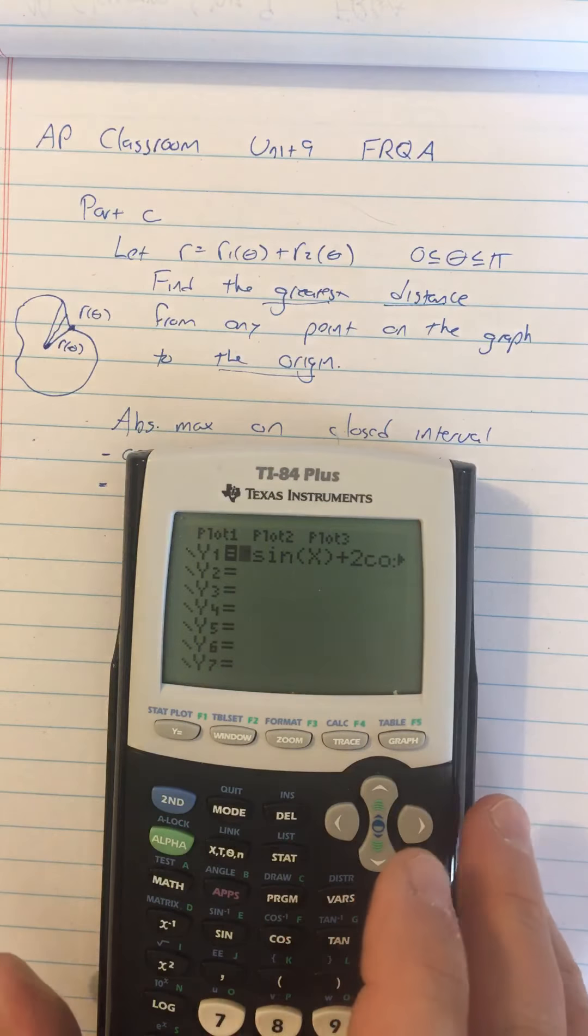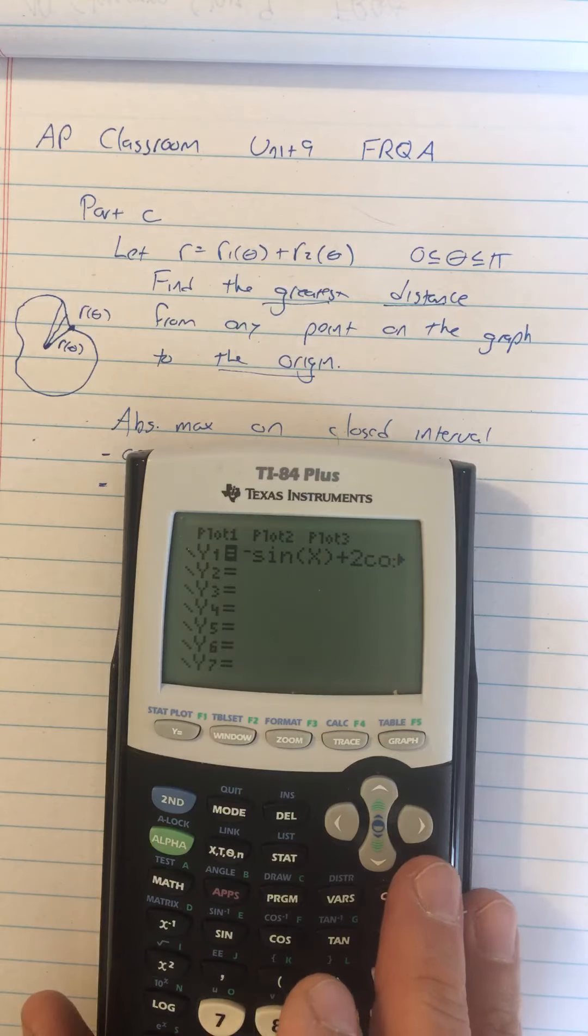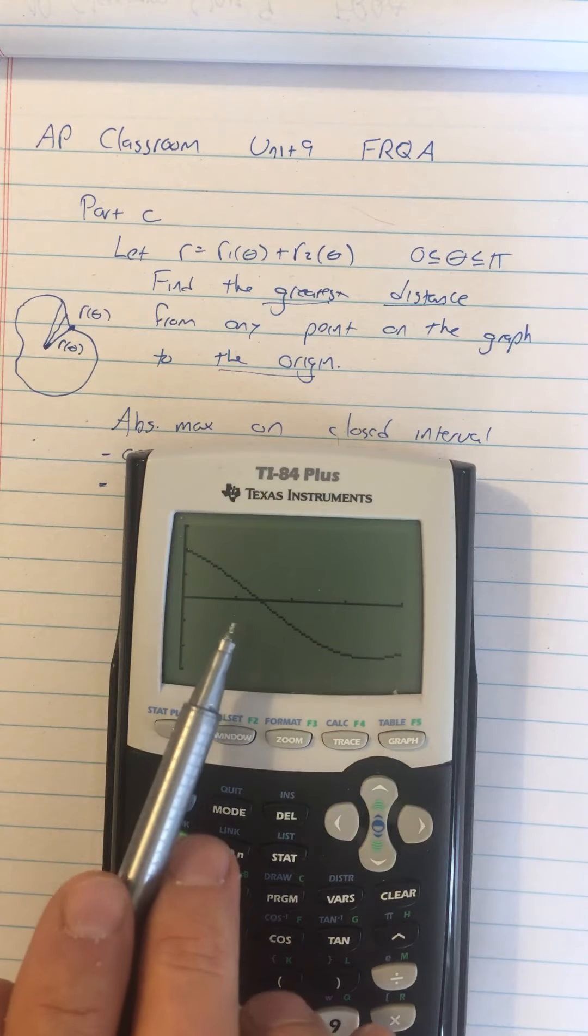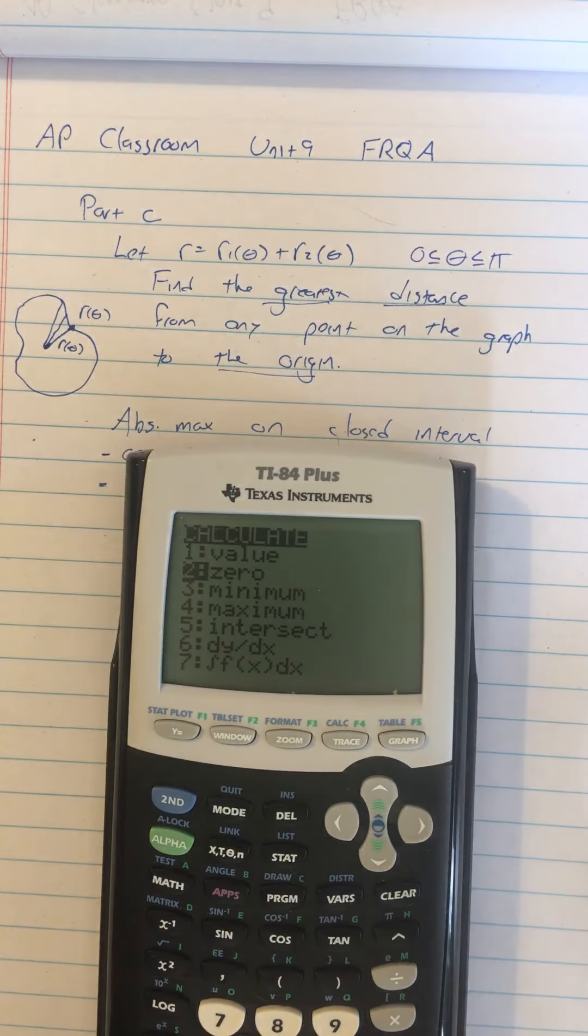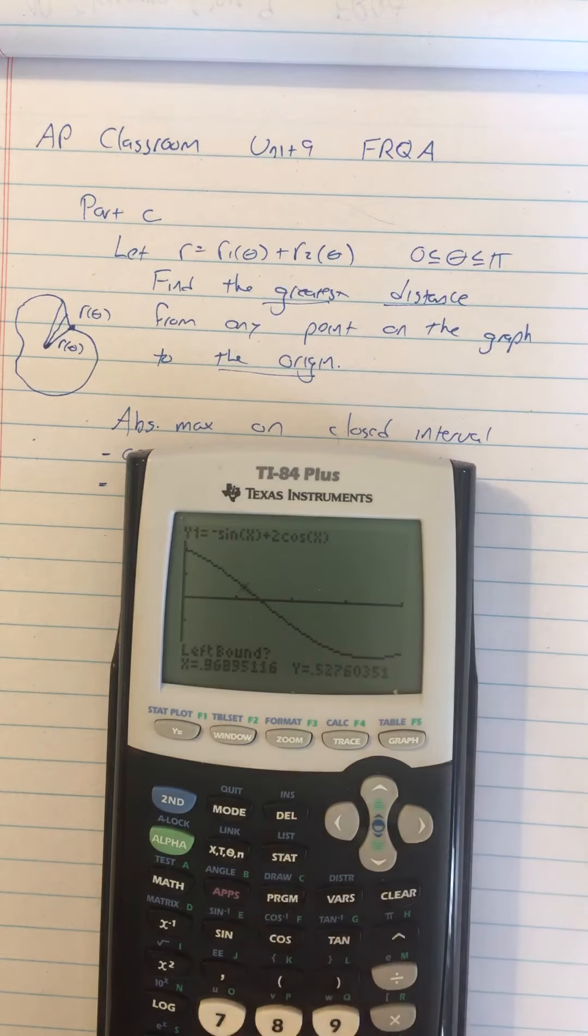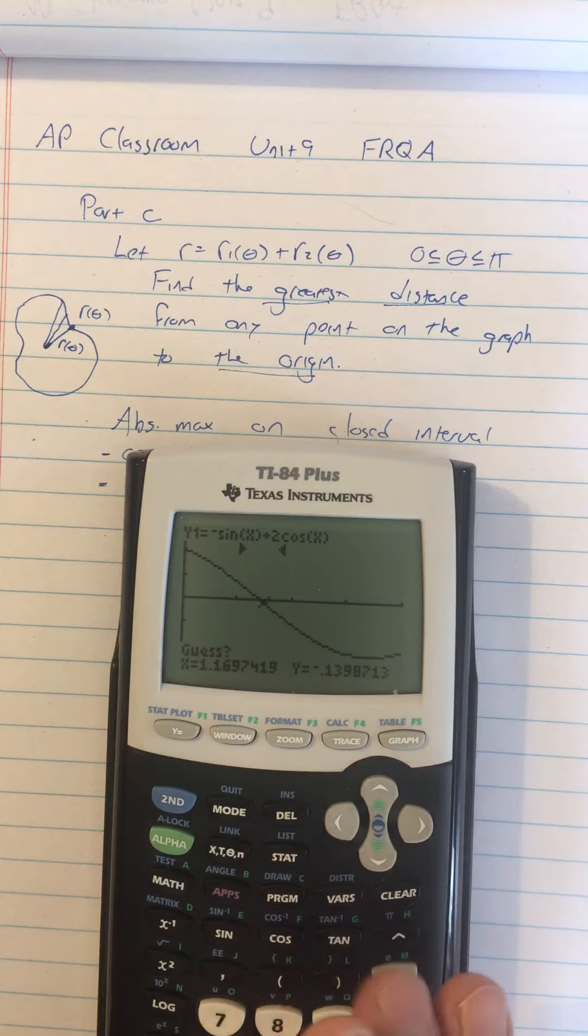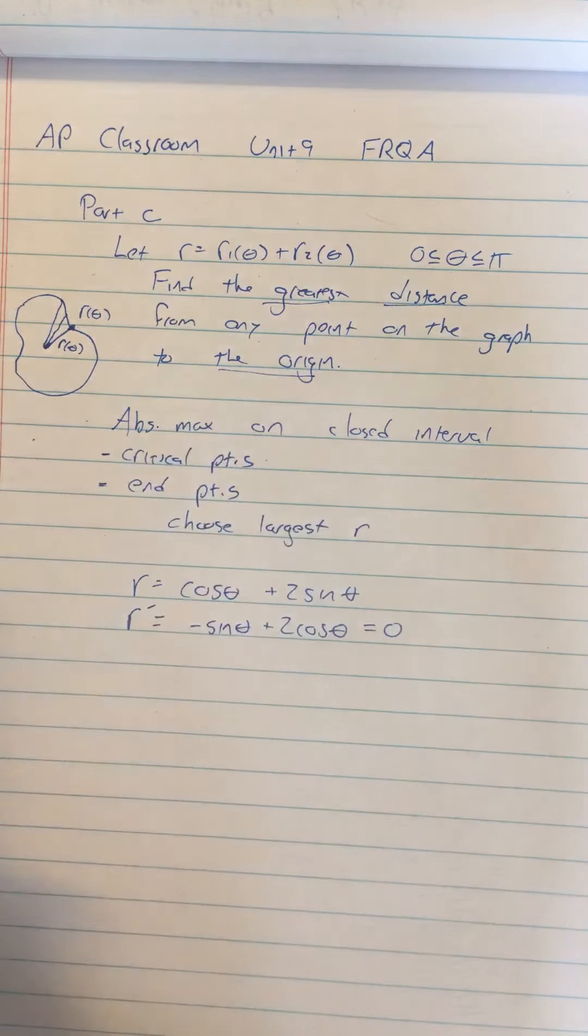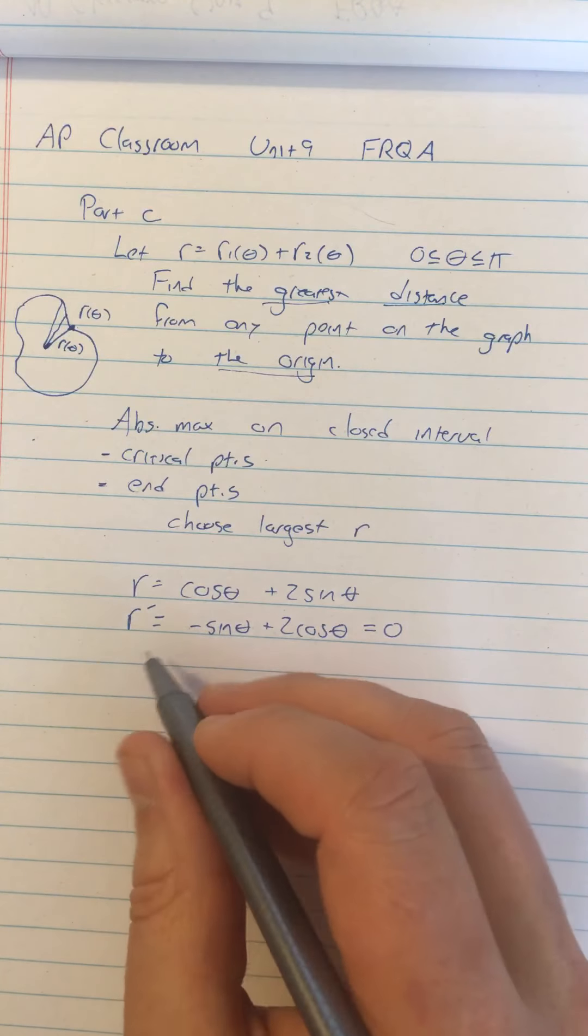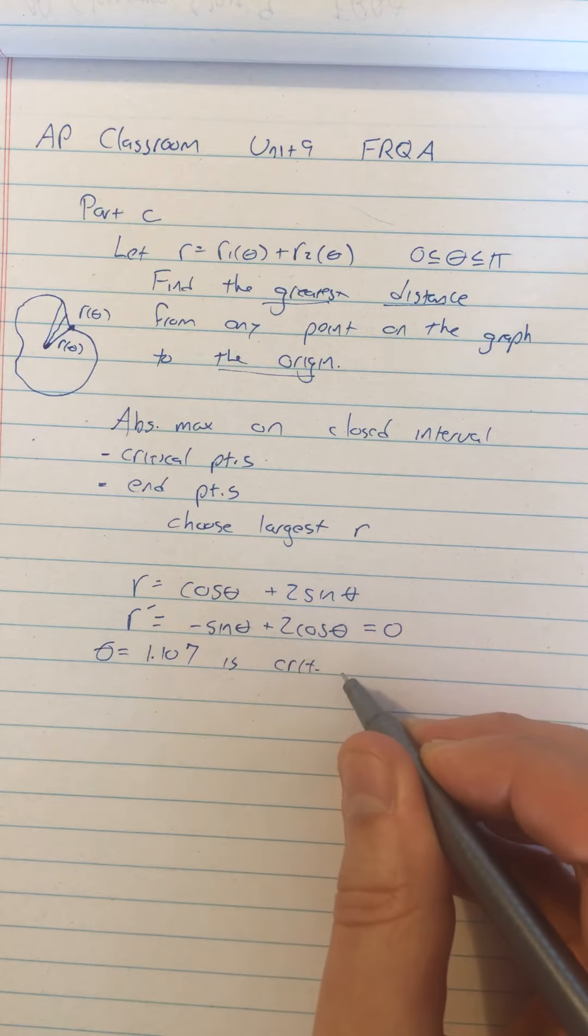So I went ahead and already put in negative sine theta plus 2 cosine theta. So that's going to allow us to look at the graph and find where the x-intercept of that graph is. So I just graph it. There's my graph. This looks like my critical point right there. So I do second calc zero. That's what your TI calls x-intercepts. So I go ahead and hit that. It wants a left bound and a right bound. So we're going to set a left bound over there. And we're going to set a right bound over here. And then we're going to look at what appears to be our x-intercept because that's going to be that seed value for the iterative process again. So we want it to be relatively good. We hit enter and we get 1.107. So that's the critical point. So theta equals 1.107 is the only critical point on the interval.